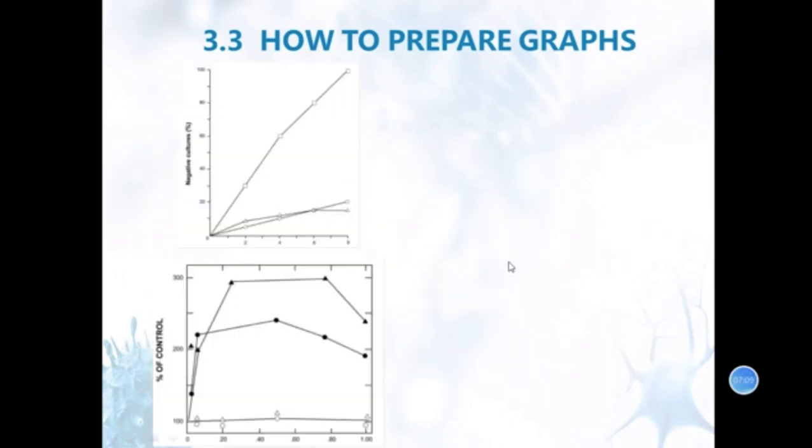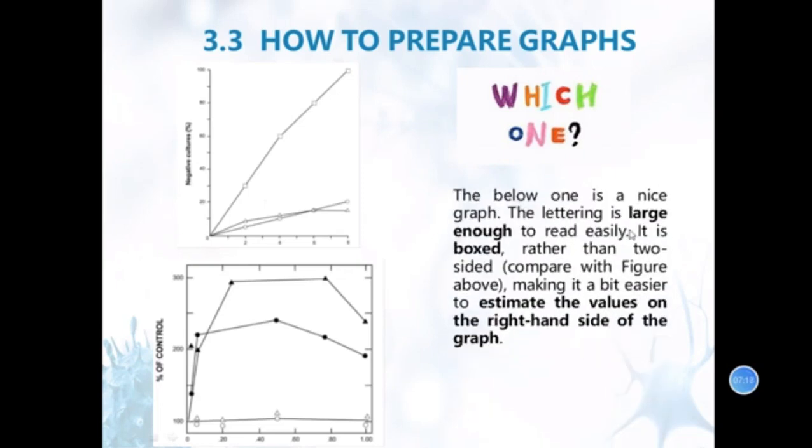Here is another example. Do you think this one is better? The below one is a nice graph. Perhaps the lettering is large enough to read easily. You see? The lettering is large enough to read easily. It is boxed rather than two-sided compared to the above figure. It's a box. I think it is a bit easier to estimate the values on the right-hand side of the graph. So, because it is boxed, it's easy for us to know the value on the right side and the left side. Because here it has some numbers.